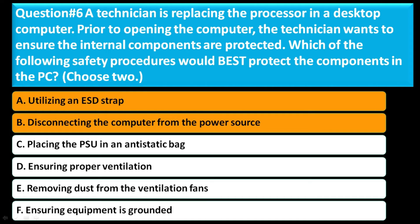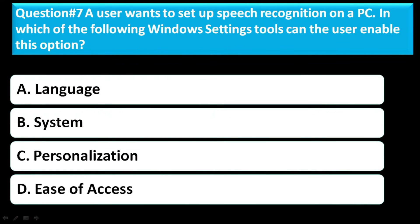Question number seven: A user wants to set up speech recognition on a PC. In which of the following Windows settings tools can the user enable these options? Option A is Language. Option B is System. Option C is Personalization. Option D is Ease of Access. The correct answer is A, Language.